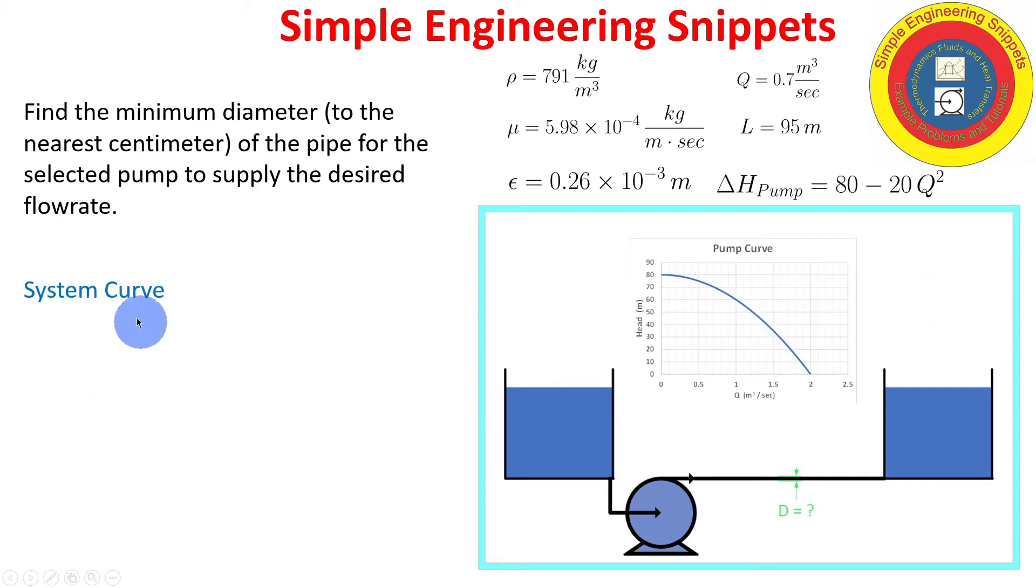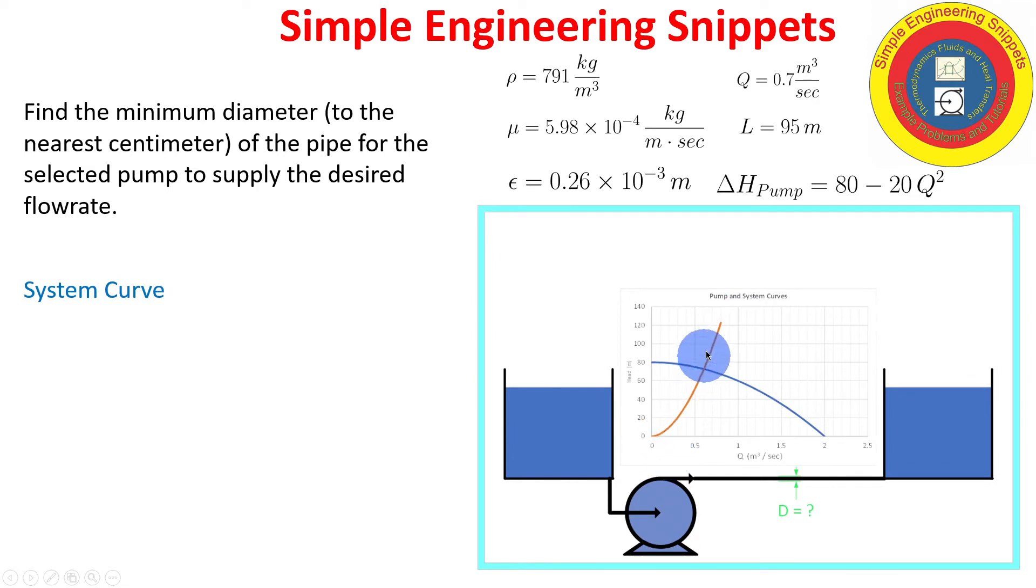So that'll be key as we iterate to find the correct diameter for this problem. But we have the pump curve. But let's look at a system curve. So here's an example in gold, the system curve. And as you might recall, the solution is where these two curves intersect, denoted here with a red circle.